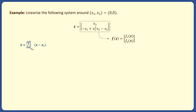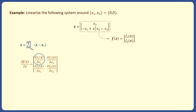In other words, f is a function that takes in two variables, x1 and x2, and outputs two variables, f1 and f2. So to take the derivative of f with respect to x, there are actually four derivatives that we should calculate. The derivatives are expressed as a matrix called the Jacobian matrix. The entries in the first row are the partial of f1 with respect to x1, and the partial of f1 with respect to x2. Similarly, the second row is the partial of f2 with respect to x1, and the partial of f2 with respect to x2.